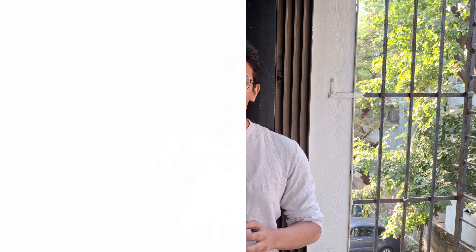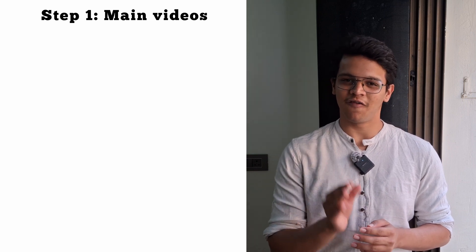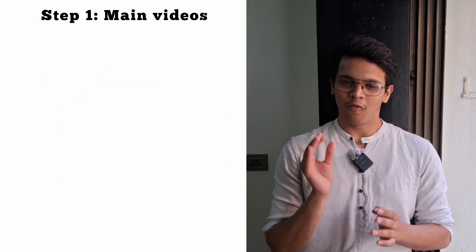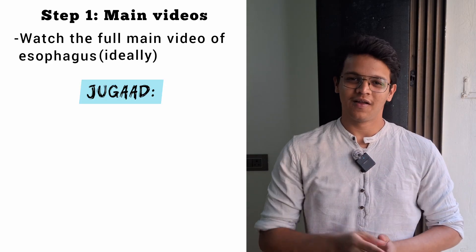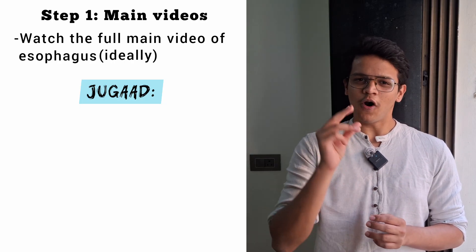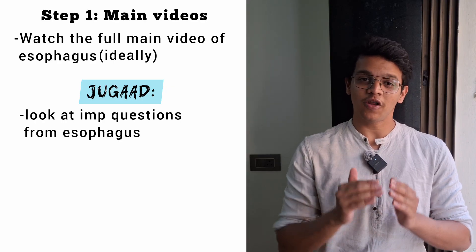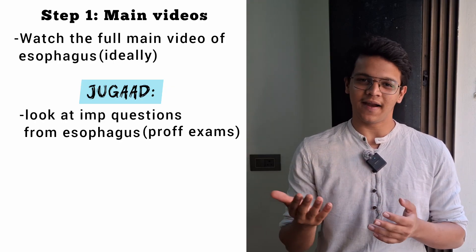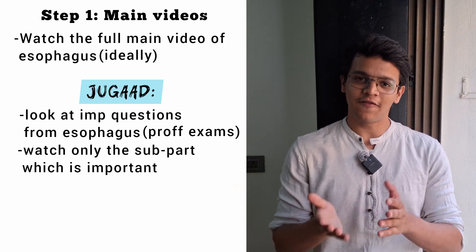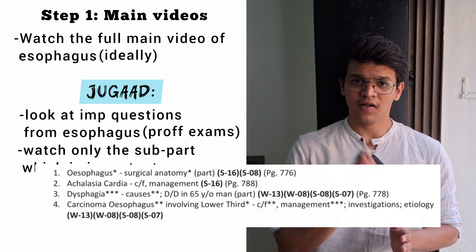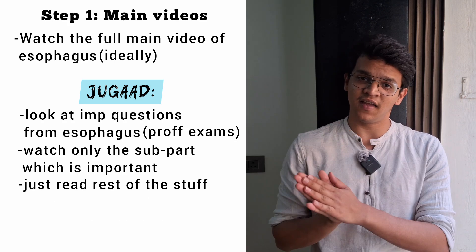Step No. 1: Main Videos. For the sake of better understanding, we will be taking the example of esophagus from surgery. So the first step is to watch the main video of esophagus. Now that is the idealistic point of view. The Jugaad is to first see what sub-topics or sub-questions of esophagus are important from your university exam point of view. That list you will automatically get from your seniors. Watch videos for only those sub-topics which are important for your university exams. Like in MUHS, we had esophageal carcinoma, so I watched only that section and read directly from the main notes. By doing this, I focused only on what's important and saved a lot of my video watching time, which is a very passive learning source.